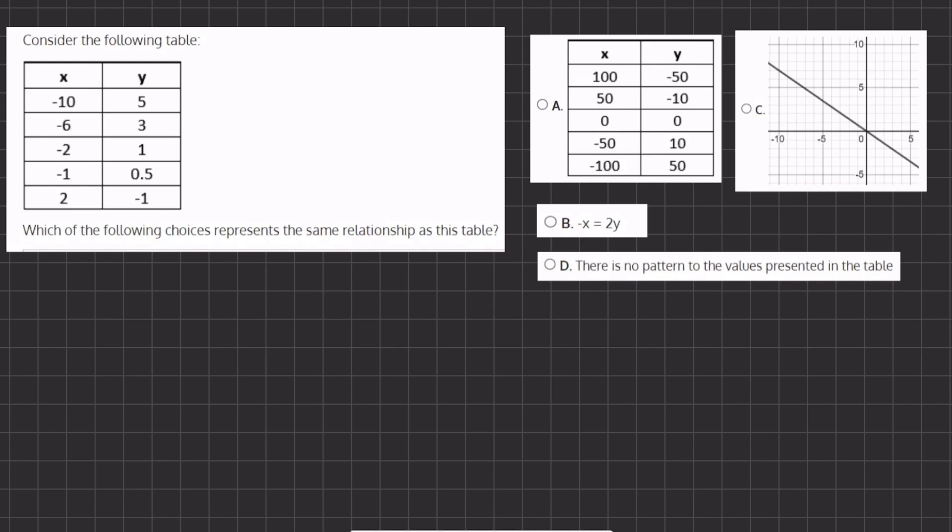Alright, so in this question we want to find which of the following options represents the same relationship that is given in our table. Now let's try to recognize some kind of pattern between x and y. How do we go from x to y in this table?